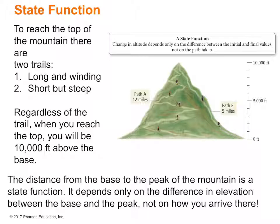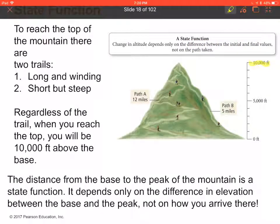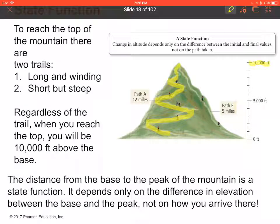The state of a chemical system is specified by parameters such as temperature, pressure, concentration, and physical state (solid, liquid, or gas). In the mountain analogy, the elevation of 10,000 feet is a state function — it doesn't matter how you got there. The distance you traveled to get there, by contrast, is not a state function. State function values are always the difference between final and initial values.